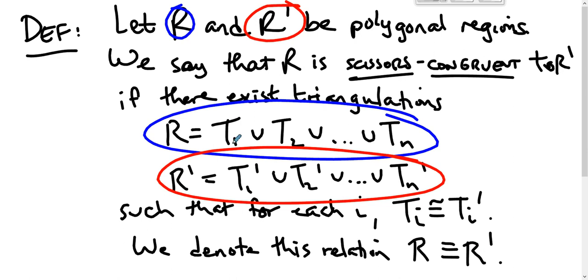And we know that if these triangles are congruent they have the same area. So what we're saying is that if R is scissors congruent to R prime, then they have the same area.